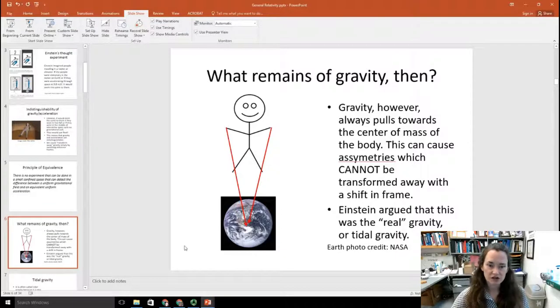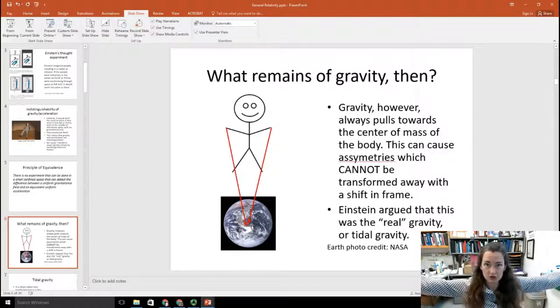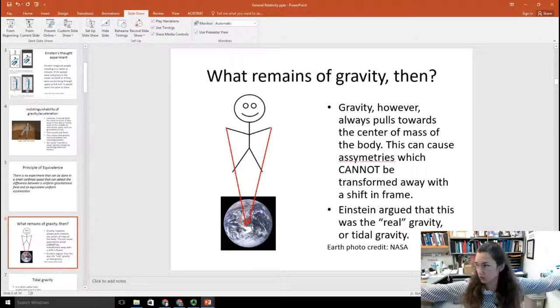Well, if that's the case, then what remains of gravity? The idea is that gravity always pulls toward the center of mass of the body, and this can cause asymmetries. And those you can't transform away. So if you imagine here, I've got this silly little diagram of this gigantic stick man, and he's being pulled towards the center of the earth. Well, at the tips of his fingers, it would seem that it's pulling in a sort of diagonal line. And so what that would do is it would force his hands down to his sides. So there's an asymmetry. It's not like each hand is pulled straight down. They're pulled in at an angle.